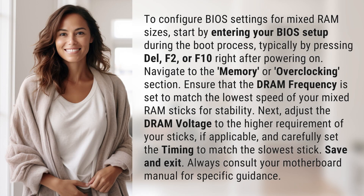To configure BIOS settings for mixed RAM sizes, start by entering your BIOS setup during the boot process, typically by pressing DEL, F2, or F10 right after powering on. Navigate to the Memory, or Overclocking, section.